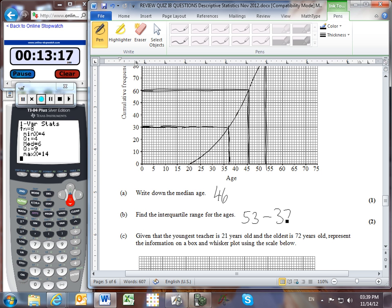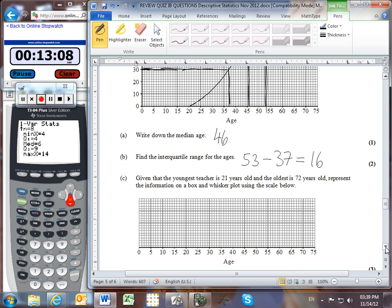53 minus 37 gives us 16 years as the interquartile range. And it's told us that the youngest teacher is 21, and the oldest is 72. So we need to make a box and whisker plot.